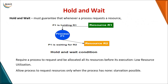The next necessary condition for a deadlock to occur is hold and wait — meaning a process P1 holds a resource and is waiting for another resource. To prevent a deadlock, we want to make this condition false — we don't want any hold and wait.